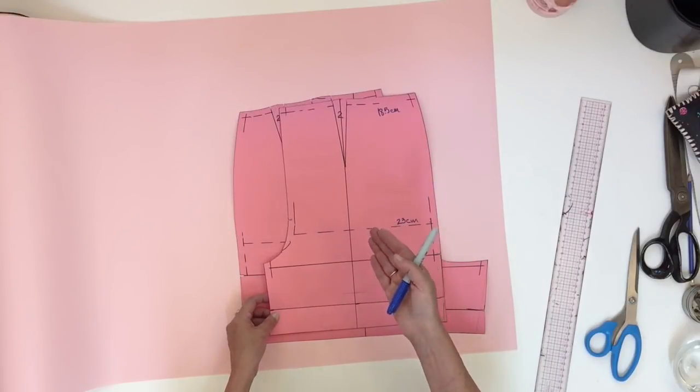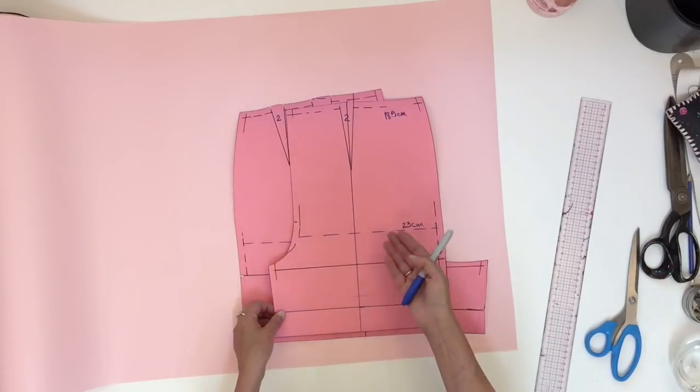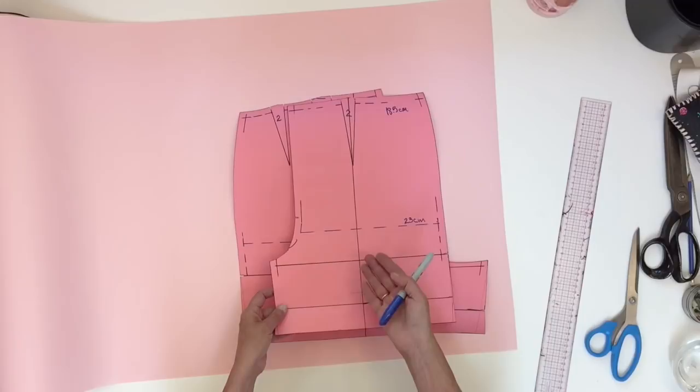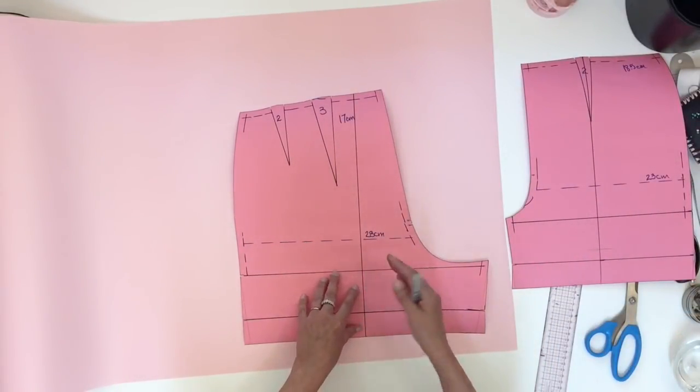Now like I said before, the paper bag waist is a variation of the elastic waist so I'm going to use the same short block that I did in my last video and we're going to do it pretty much the same way.